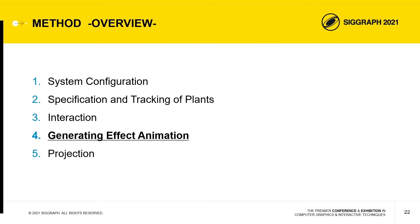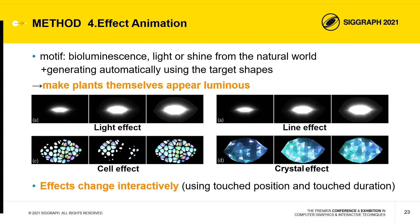Next, we'd like to talk about effect animations. Our concepts for effect animations are bioluminescence and light or shine from the natural world. Our system generates effect animations using the target shapes. By these motifs, we make plants themselves appear to be luminous. We propose four effect animations: light, line, cell, and crystal. Each effect animation changes interactively using detected touch events.